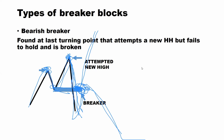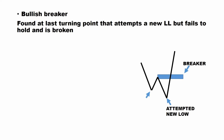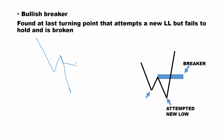Now let's continue to the bullish one. The bullish one is just the opposite of the bearish one. This one is found at the last turning point that attempts to create a new lower low, but fails to hold and is broken — in simple terms, also just a failed order block. Remember when the market is pushing down, creating lower low, lower high, lower low, lower high — we have order blocks being created at every lower high that is supposed to push price down. The moment it fails to hold price and it is broken, this order block has become a Breaker Block because it has been broken.